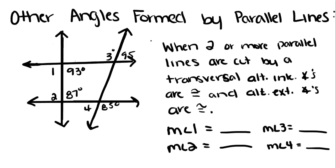Today we're going to go over the other angles formed by parallel lines and their relationships to one another. When two or more parallel lines are cut by a transversal, their alternate interior angles are congruent and alternate exterior angles are congruent.